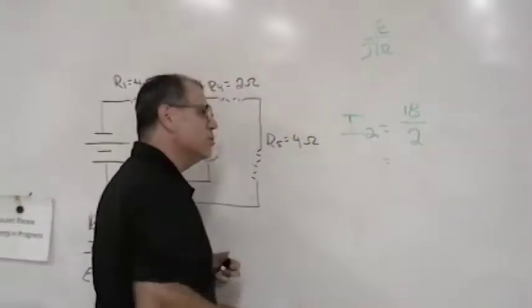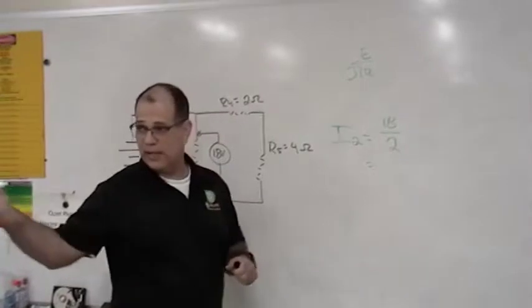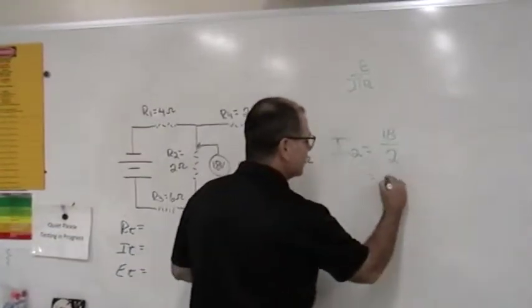So in this case, 18 divided by 2 gives us, what do we get, guys? 9, 9 amps.